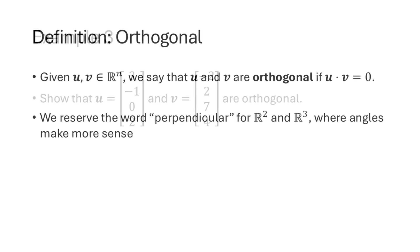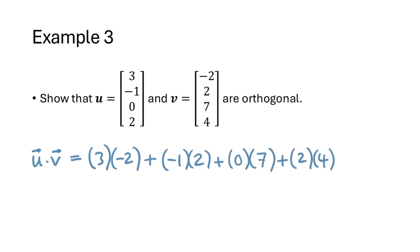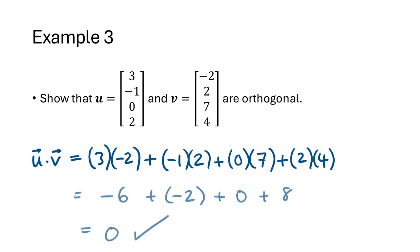Let's try this definition. To show that two vectors in R4 are orthogonal, we compute u dot v by multiplying the corresponding entries of u and v and adding up the results. We get 0, which matches our definition of orthogonal.